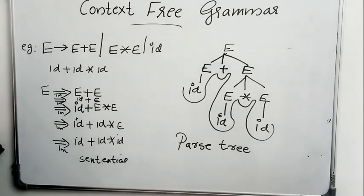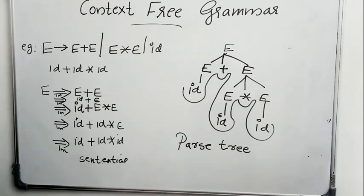This is all about context-free grammars — leftmost derivation, rightmost derivation, sentential form, sentences, and parse trees. Hope you understood. Thank you.